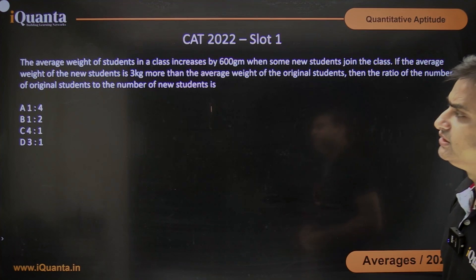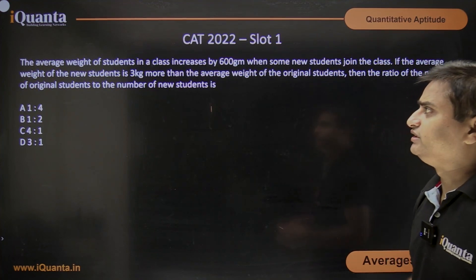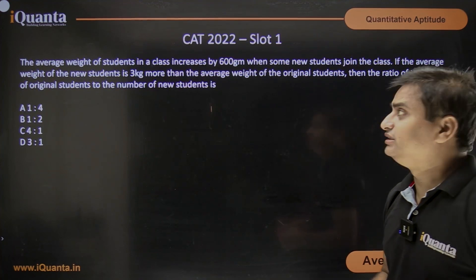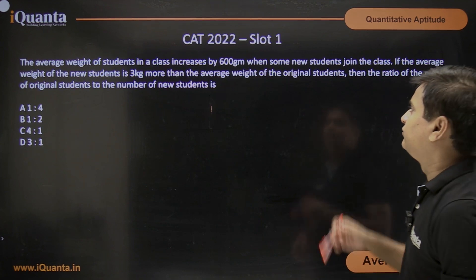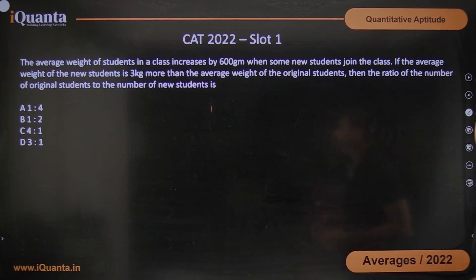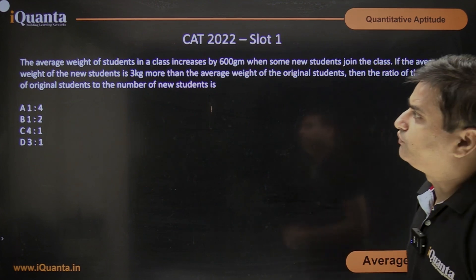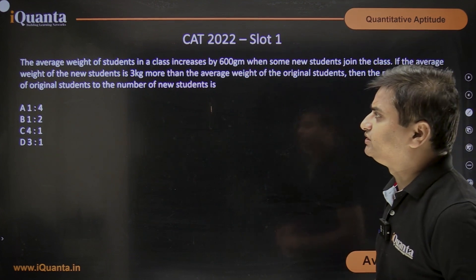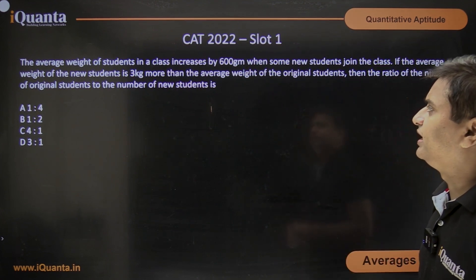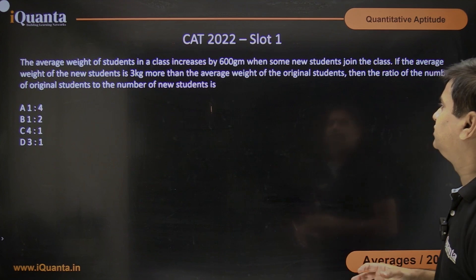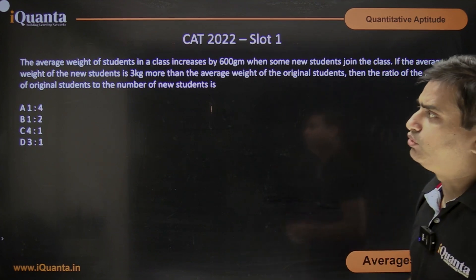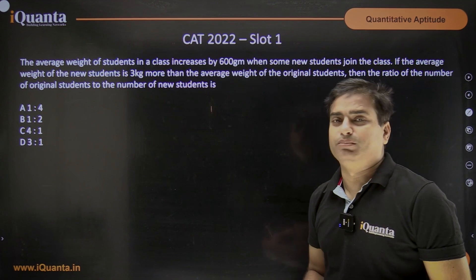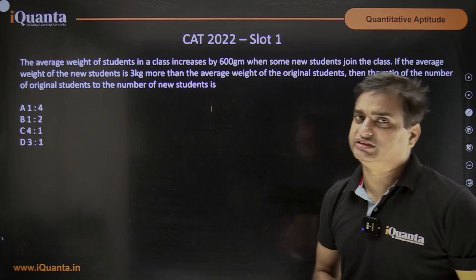The question says: the average weight of students in a class is increased by 600 grams when some new students join the class. If the average weight of the new students is 3 kilograms more than the average weight of the original students, then find the ratio of the number of original students to the number of new students.